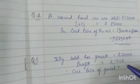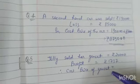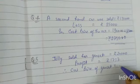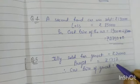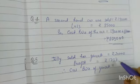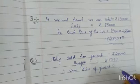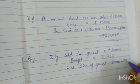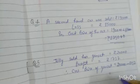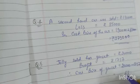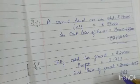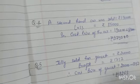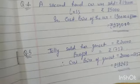Jolly sold a genset for rupees 20,000 with a profit of rupees 1,737. Find the cost price of the genset. Since there is profit, cost price is less than sales price. So cost price equals 20,000 minus 1,737. Working through: 10 minus 7 is 3, 9 minus 3 is 6, 9 minus 7 is 2, and 9 minus 1 is 8. So cost price of the genset is 18,263 rupees.